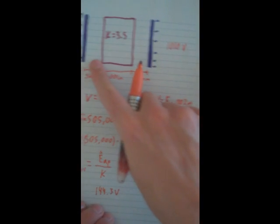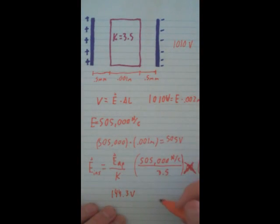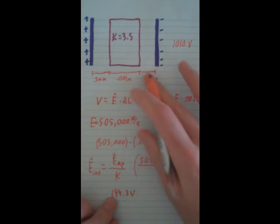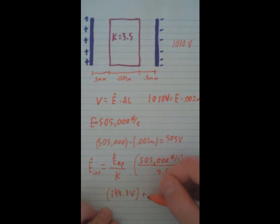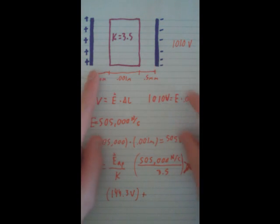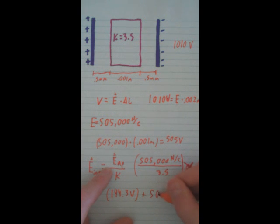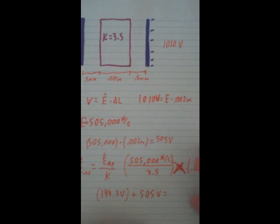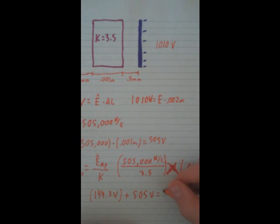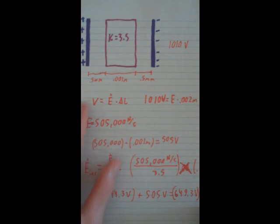To find the total voltage drop across this whole thing, we just add the voltage drop across the insulator — which was 144.3 volts — plus the voltage drop from the two air gap points, which was 505 volts. That gives us an answer of about 649.3 volts. And that's how you figure out the voltage between something with an insulator and air gaps.